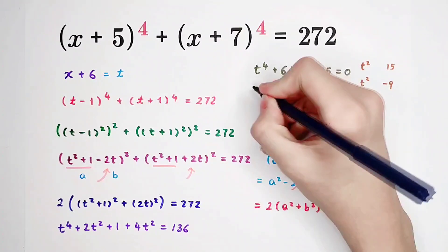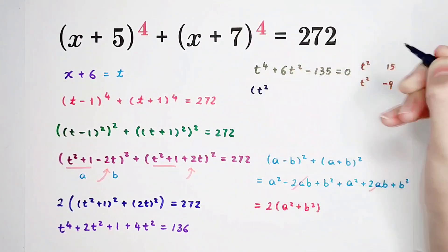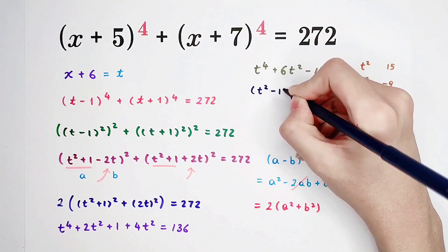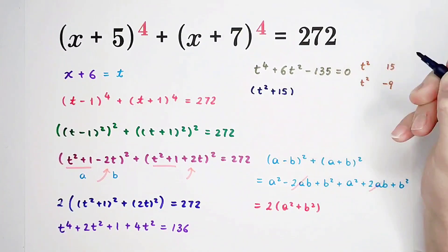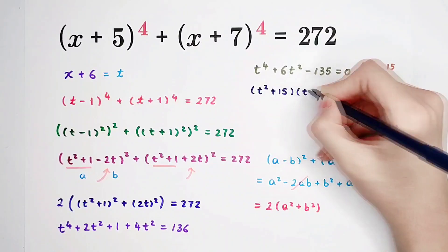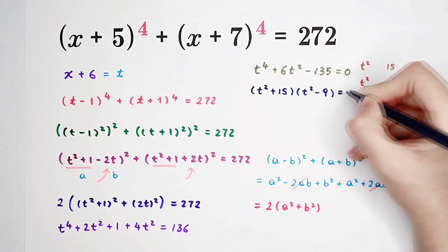So that means this is just t squared plus 15, then times t squared minus 9 equals 0.